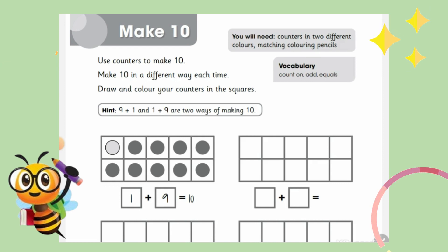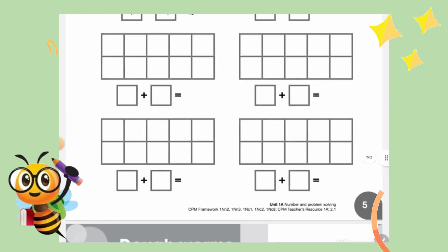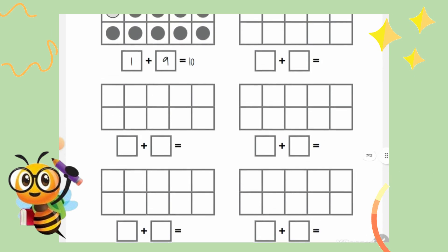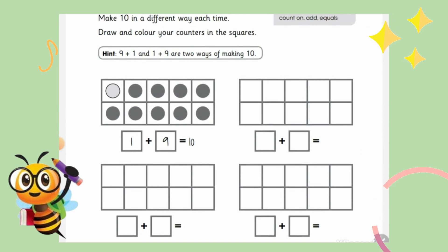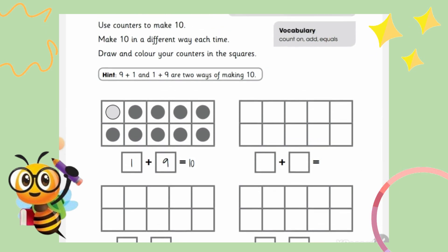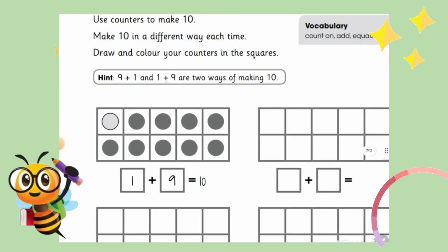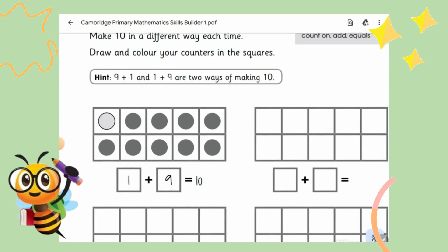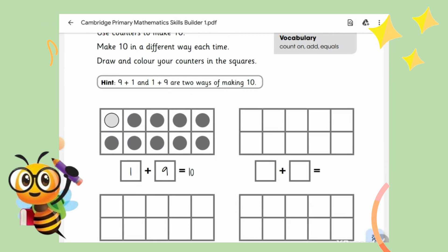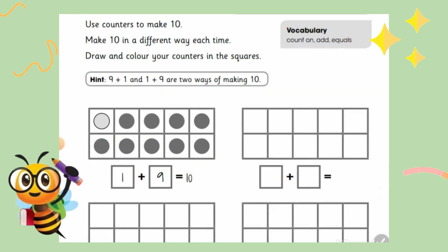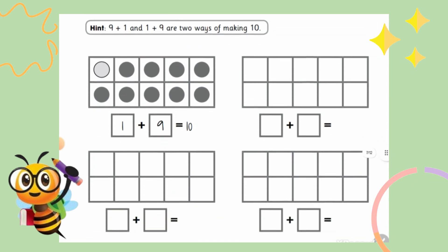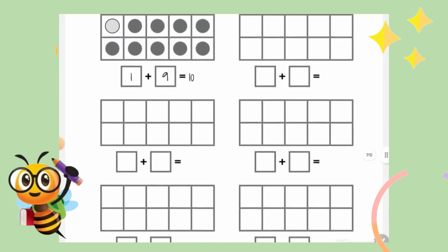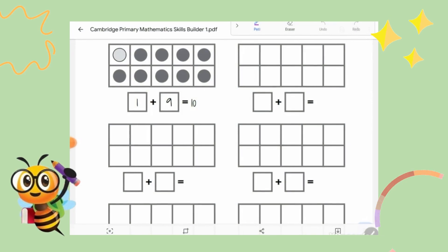We have five blocks that we need to fill, and each time we have to make ten with different numbers. For example, here is the hint: nine plus one and one plus nine are two ways of making ten. So if nine plus one can make ten, then one plus nine can also make ten. Draw and color your counters in the square.